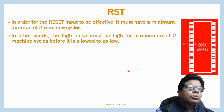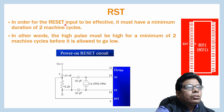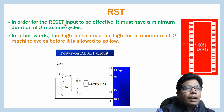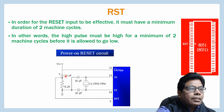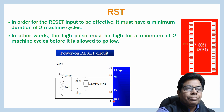For the RST input to be effective, it must have a minimum duration of 2 machine cycles — in other words, the high pulse must be high for a minimum of 2 machine cycles before it is allowed to go low. This is achieved with a 10 microfarad capacitor connected with an 8.2K resistor, and this combination is connected to the reset pin, which is pin number 9.